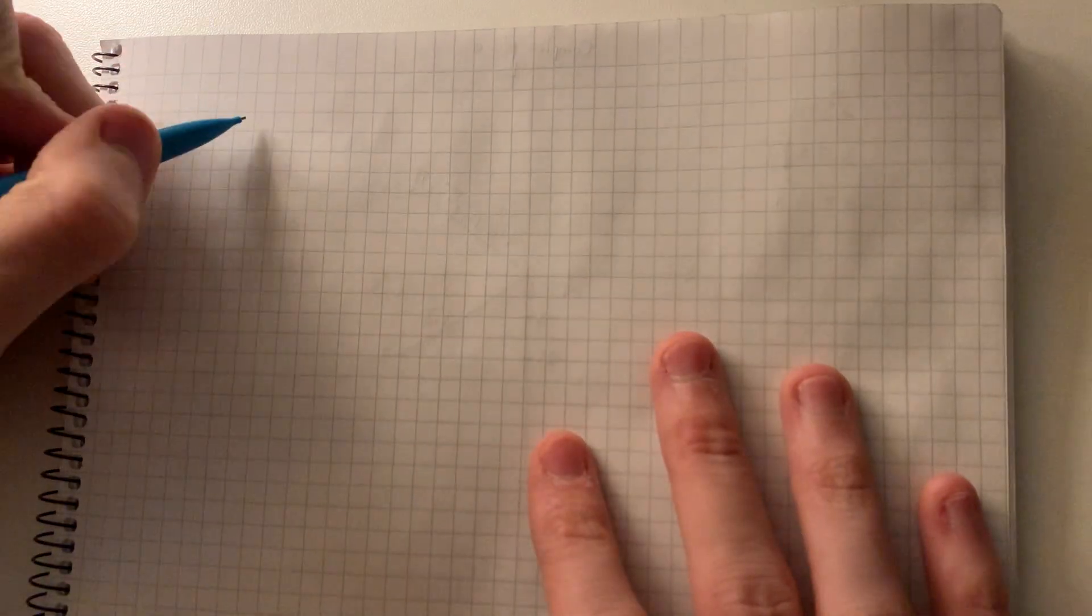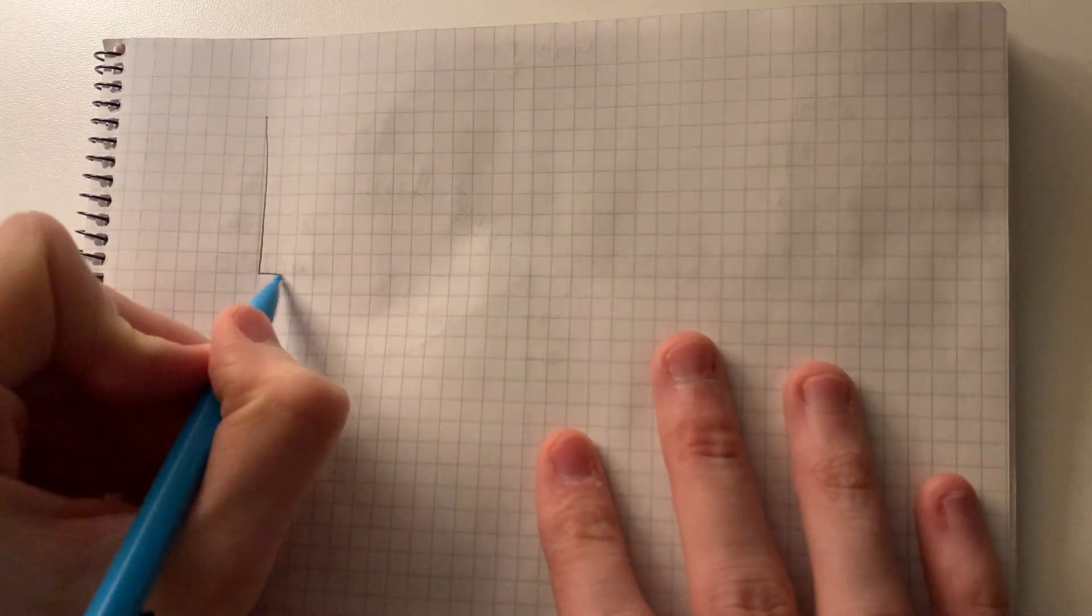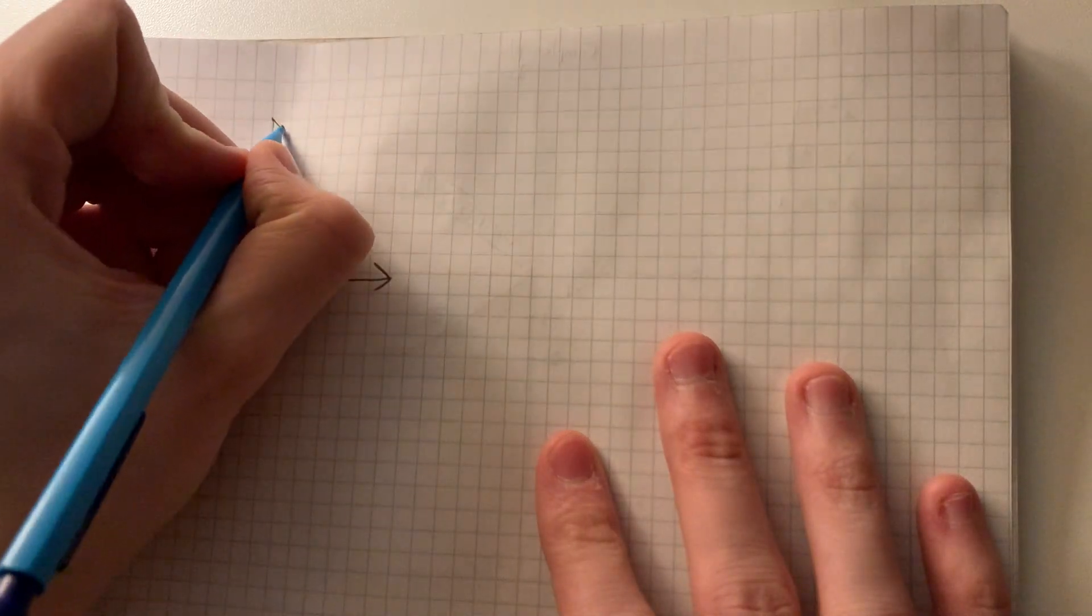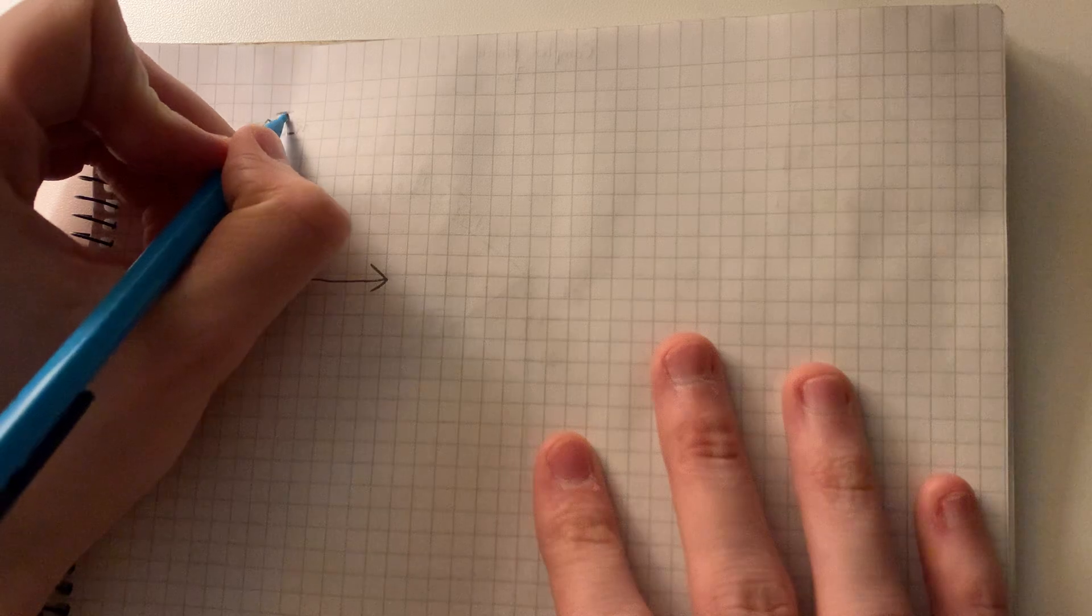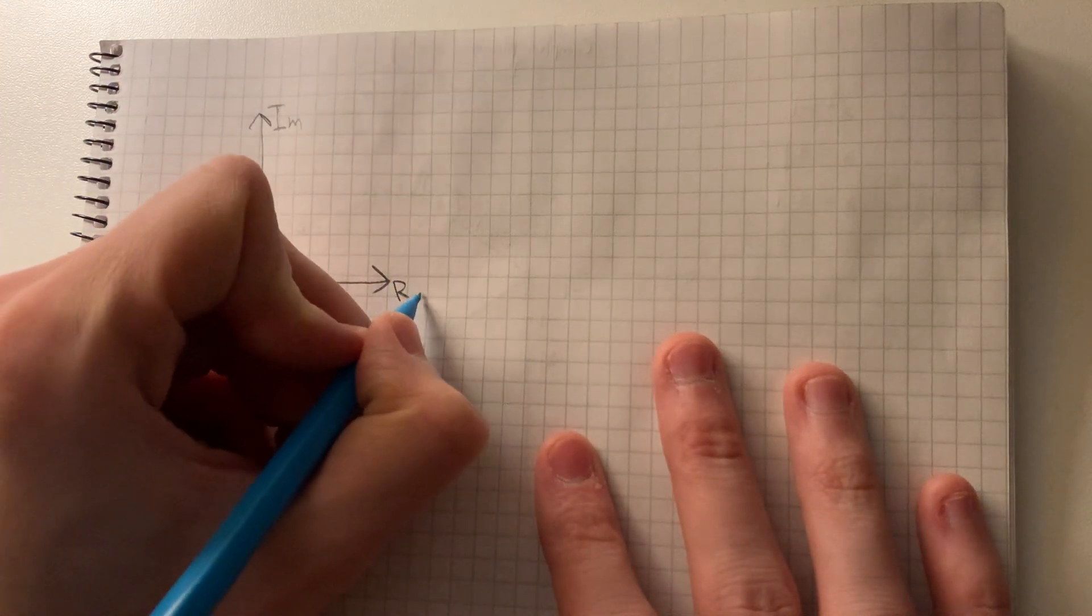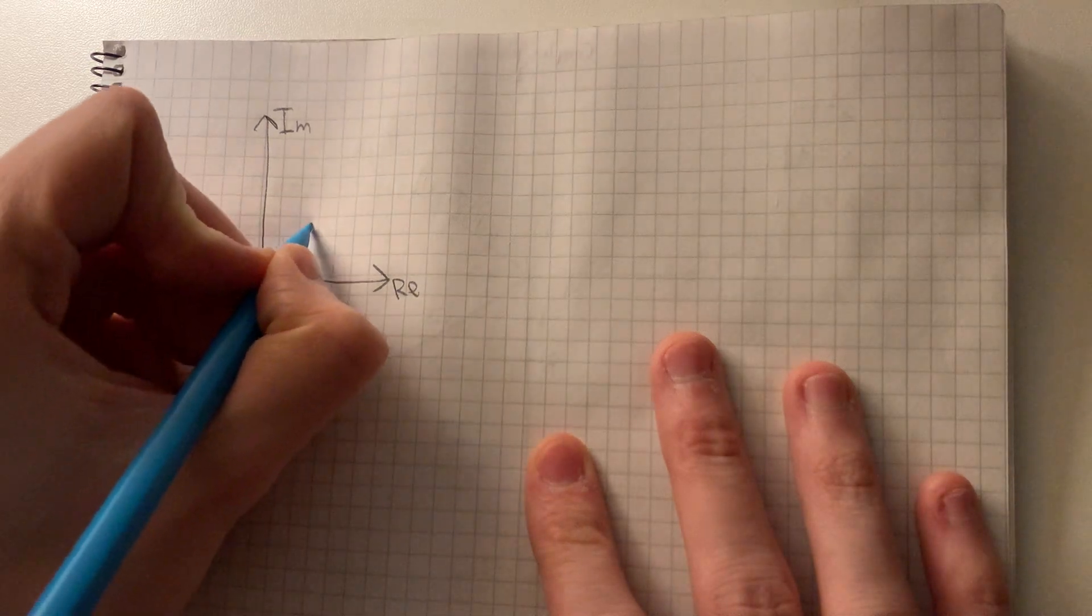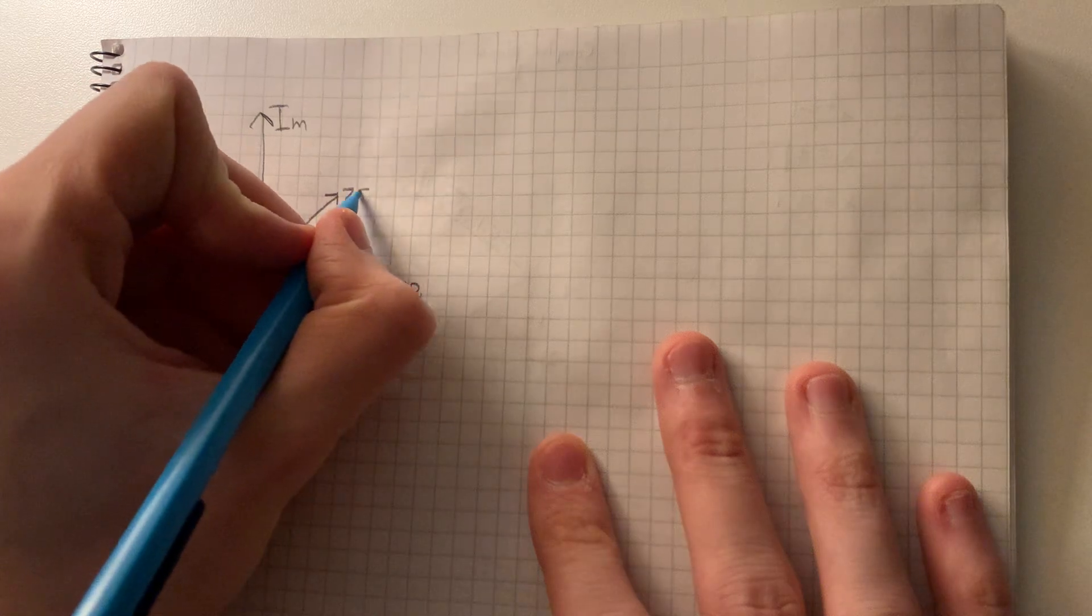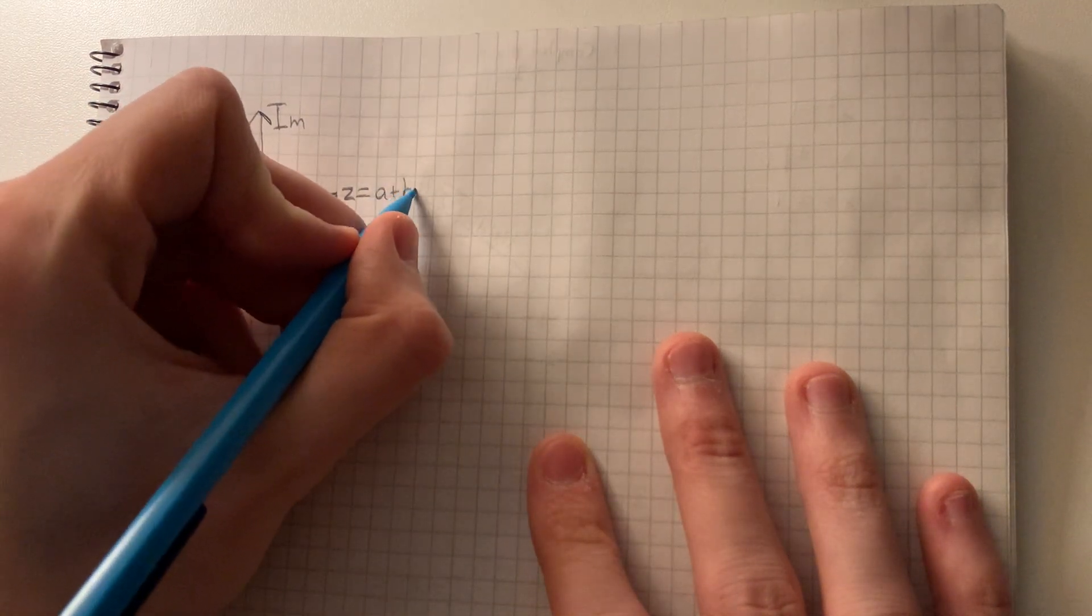But first, let's see how we have the complex plane with the imaginary part and the real part. And then we have a set here with a plus bi.